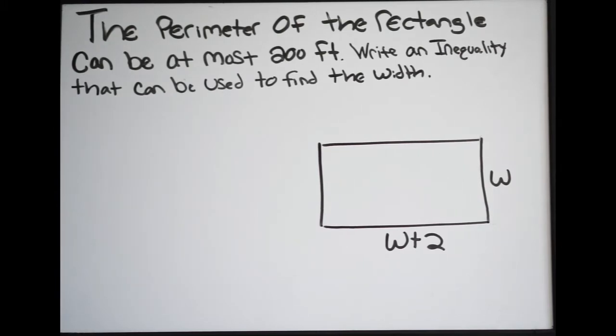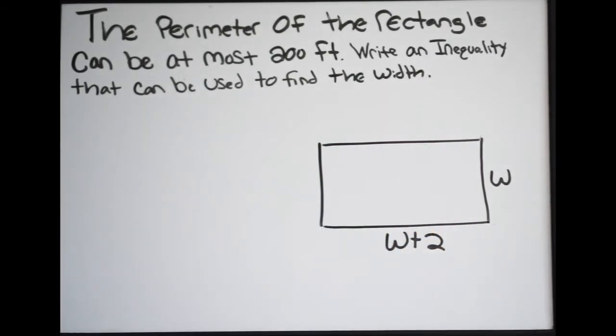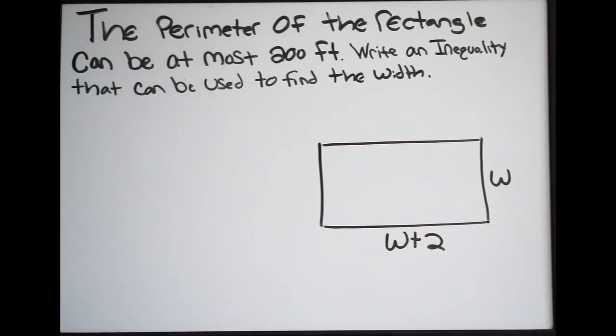Doing this out, we know that this here is going to be a length of w. This is also going to be a length of w. So what I'm going to do here is write two w.